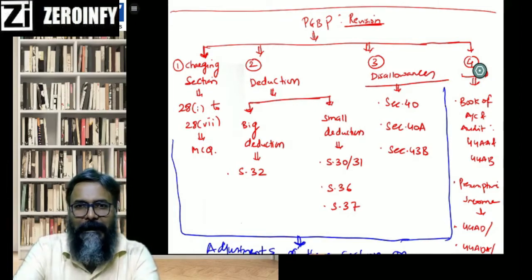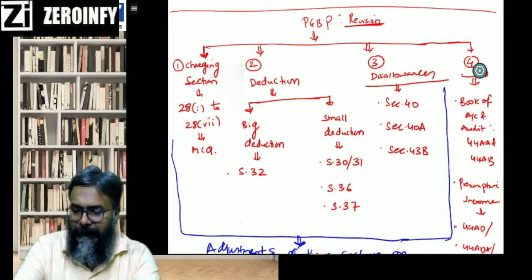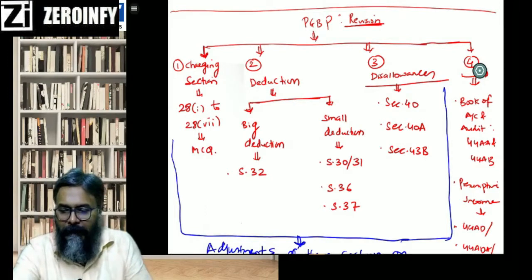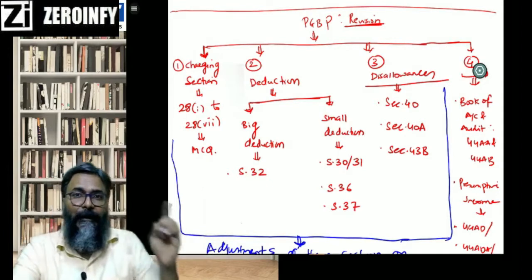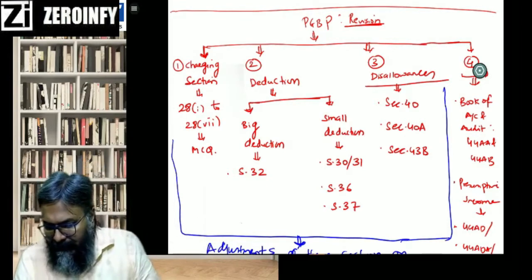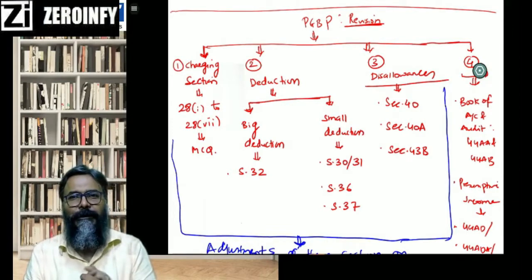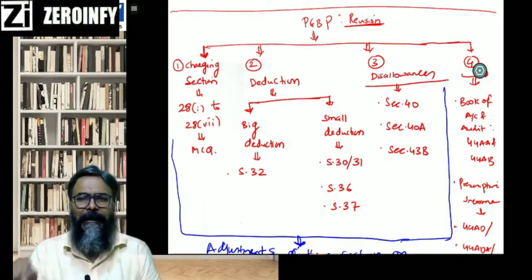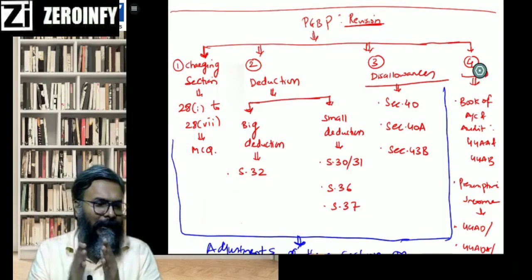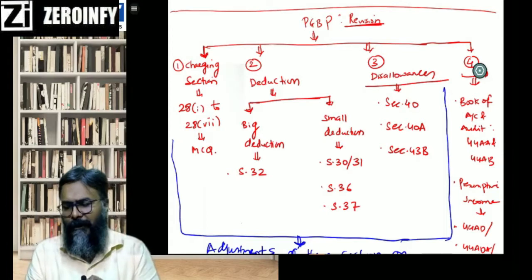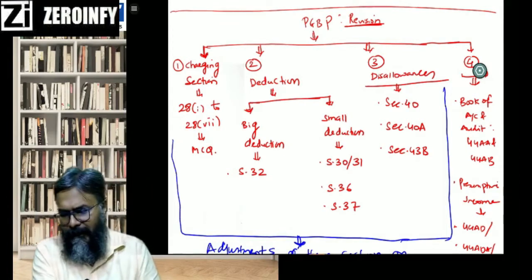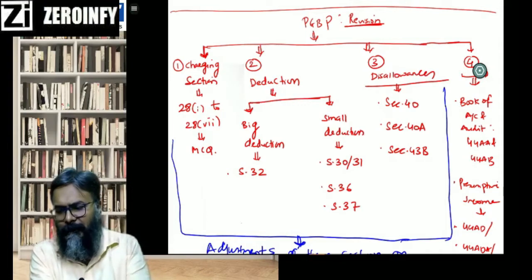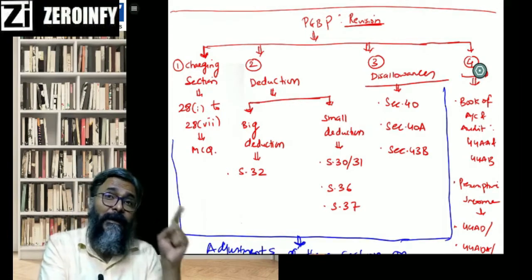Today, as I told you in the last class, we will also be doing some questions from your modules so that a comprehensive revision is taking place in terms of practical questions as well. It's a balance of both practical and theoretical parts. Now, in the chart we prepared yesterday, I've already built it up — first one is about the charging section, second is about deductions, with big deductions and small deductions.